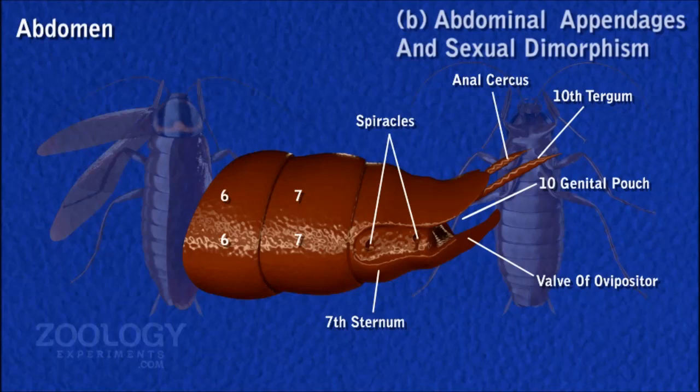In the female, the abdomen is broader than in the male. The genital aperture is located on the eighth sternum, surrounded by gonapophysis forming an ovipositor. The seventh sternum of the female forms a boat-shaped genital pouch and is split behind, forming two gyno-valvular plates. Frequently, an egg cocoon may be held in this pouch.